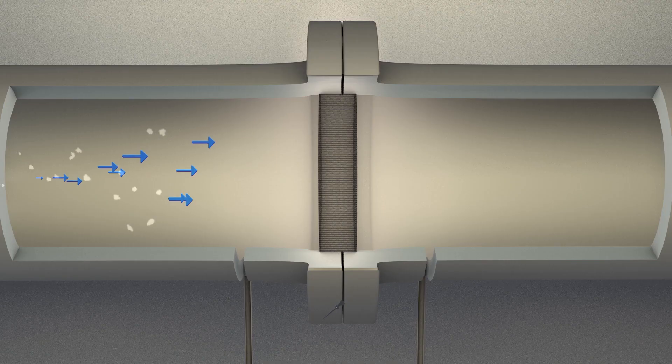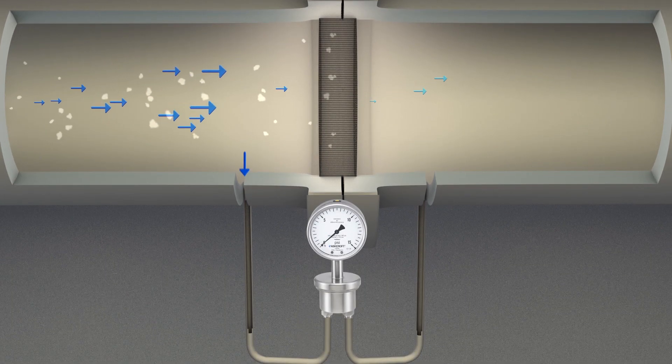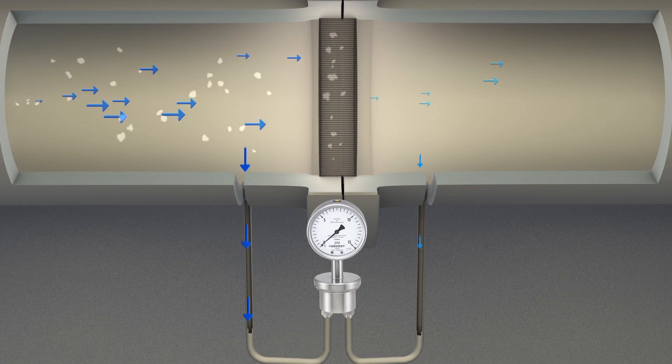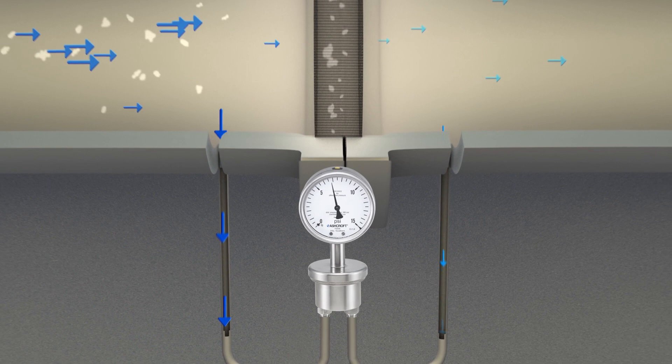So how can we measure the DP? Placing taps both before and after the filter, a differential pressure measuring instrument can be connected to detect the high side and low side pressures. The instrument will report the difference between the two sides.